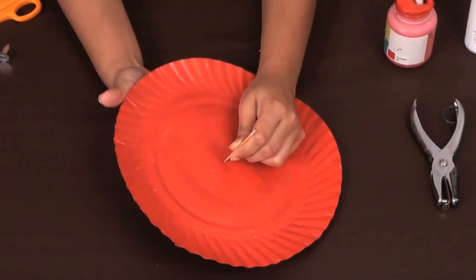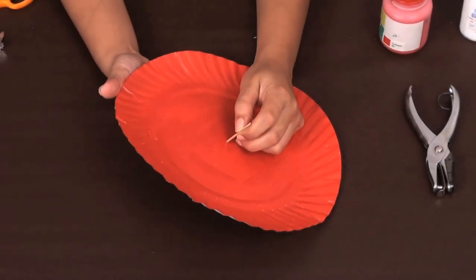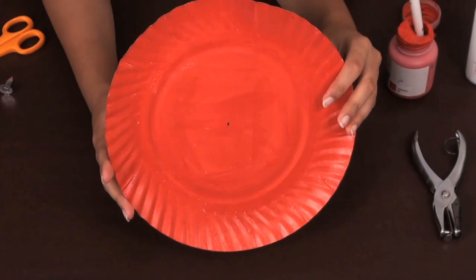After it's dried, poke a hole in the center of the plate using a toothpick. There, a neat little hole.